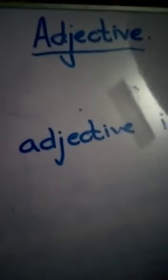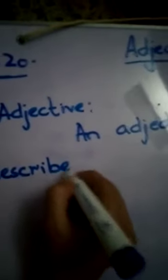We are going to write the definition of adjective. What is an adjective — for your remembrance? An adjective is a word which describes a noun.